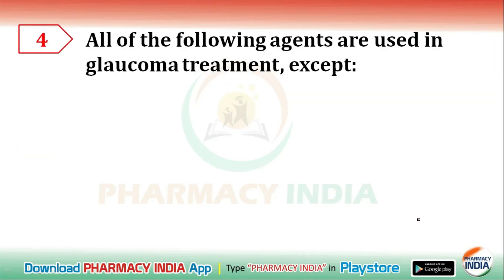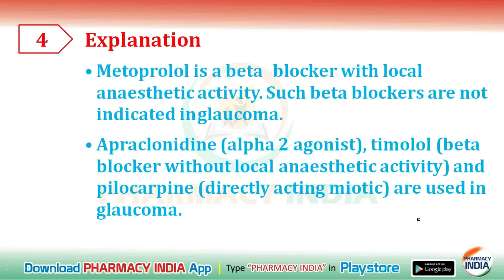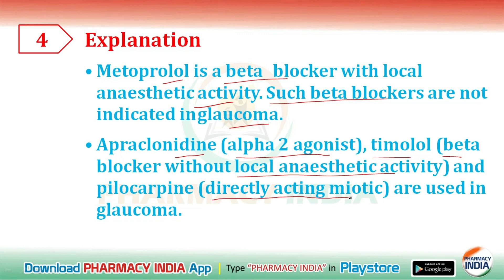Next question: all of the following agents are used in glaucoma treatment EXCEPT — apraclonidine, timolol, pilocarpine, or metoprolol? The correct answer is metoprolol. Metoprolol is a beta blocker with local anesthetic activity, and such beta blockers are not indicated in glaucoma. Apraclonidine is an alpha-2 agonist, timolol is a beta blocker without local anesthetic activity, and pilocarpine is a directly acting miotic used in glaucoma.